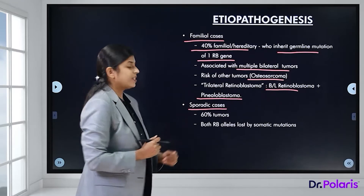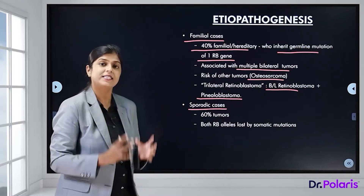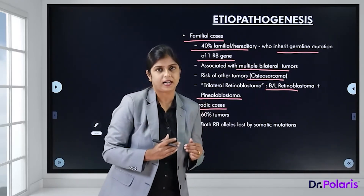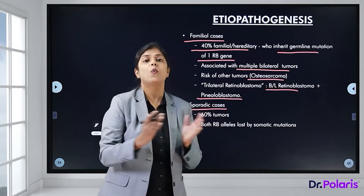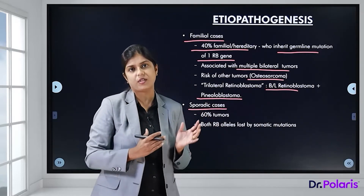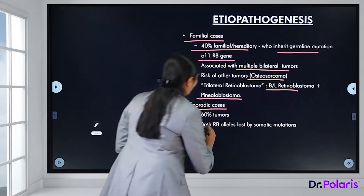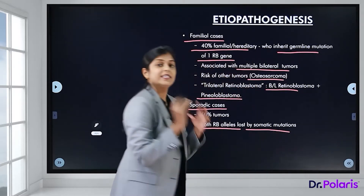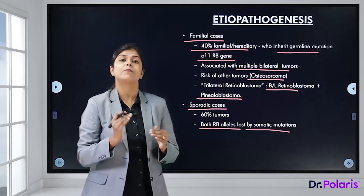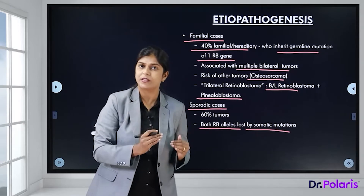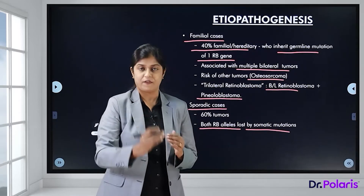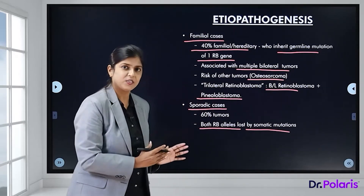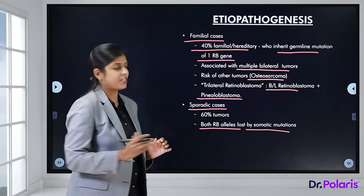Sixty percent of retinoblastomas can be sporadic, meaning there is no family history. In sporadic cases, both retinoblastoma alleles are lost by somatic mutations — that is, mutations in both alleles occur later in life after birth.